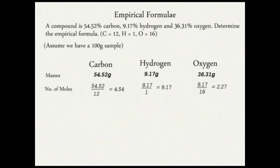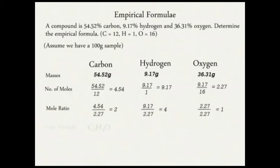We have a decimal ratio for carbon, hydrogen, and oxygen, but we cannot write a formula with decimal figures. We must convert them into the simplest whole number ratio by dividing all the moles by the smallest value, which is 2.27. This gives us the ratio of 2:4:1, so the empirical formula of the compound is C₂H₄O.